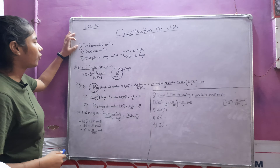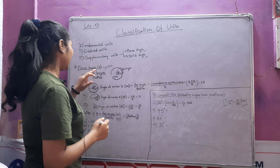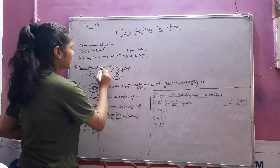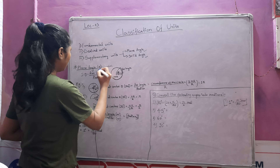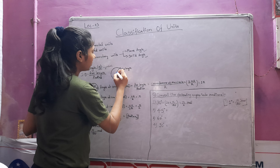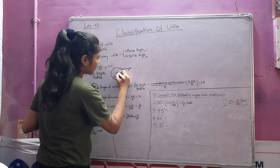Supplementary units are of two types: plane angle and solid angle. Let's talk about plane angle. Its symbol is theta, as you can see here, and its formula is arc length upon radius. Suppose it is a circle and if we want to find this angle theta — this is the plane angle — we will apply the formula: arc length upon radius, where this is the arc length and this is the radius.